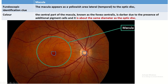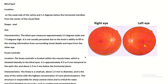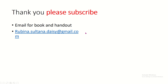The macula appears as a slightly dark area lateral to the optic disc. The center of the macula is known as the fovea centralis, which is darker due to the presence of additional pigment cells, and its diameter is the same as the optic disc. This concludes today's presentation. If you liked this video, please share and subscribe to the channel.